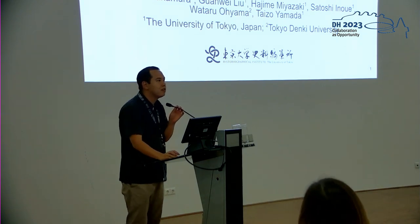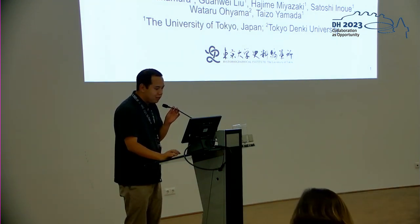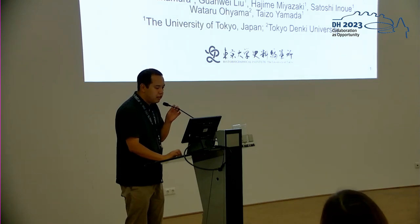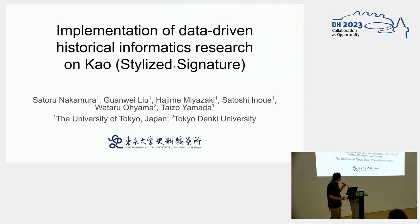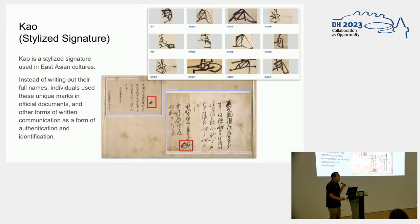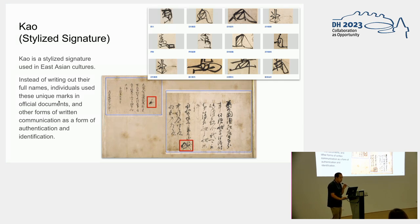My name is Satoru Nakamura from the University of Tokyo, and today I'd like to talk about Japanese historical stylized signatures. First, I want to introduce stylized signatures, which we call Kao in Japanese. Kao is used in East Asian cultures. Today this kind of sign is less common, but in the past individuals used these marks for official documents as a form of authentication and identification of creators.